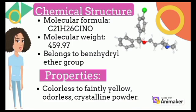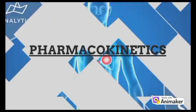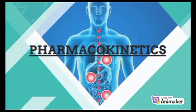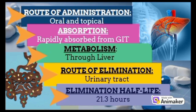Let's talk about its pharmacology. Clemastine can be administered in the body through oral and topical routes. It is rapidly absorbed by the gastrointestinal tract and metabolized by the liver via mono- and di-demethylation and glucuronide conjugation. Its bioavailability is 39.2%. It is excreted out of the body through the urinary tract and its elimination half-life is 21.3 hours.